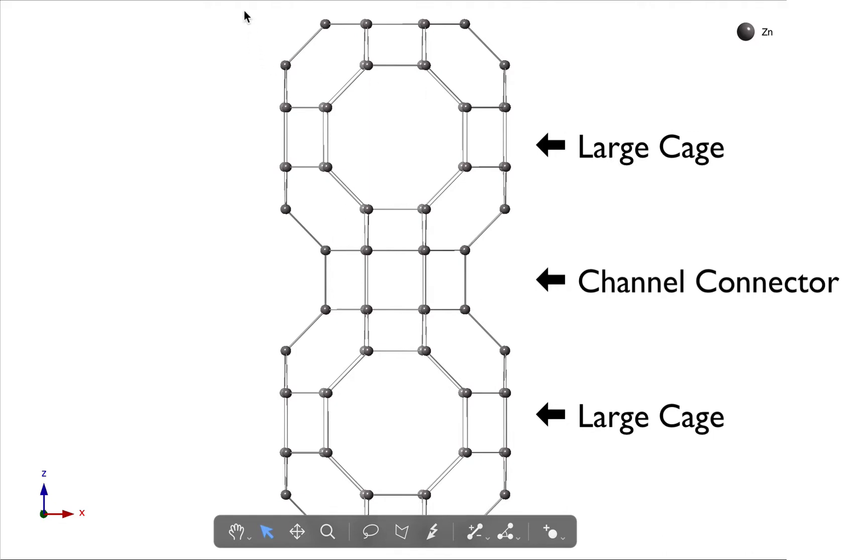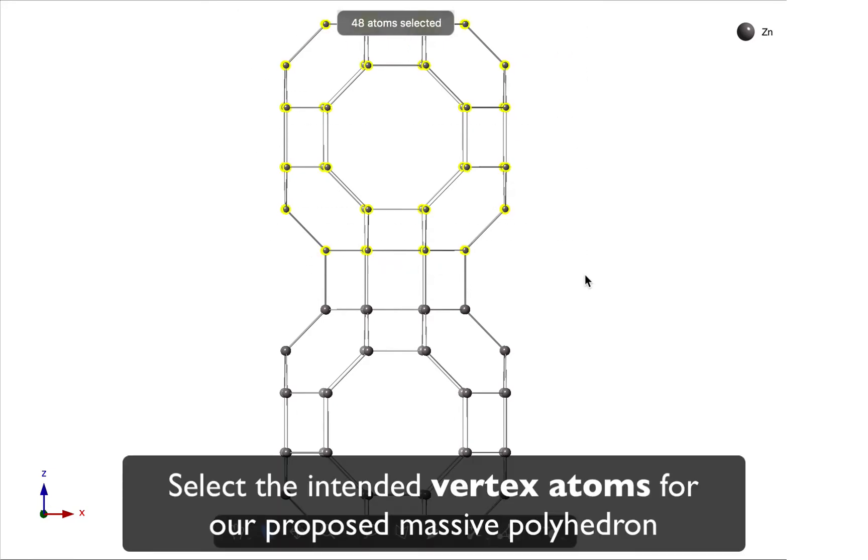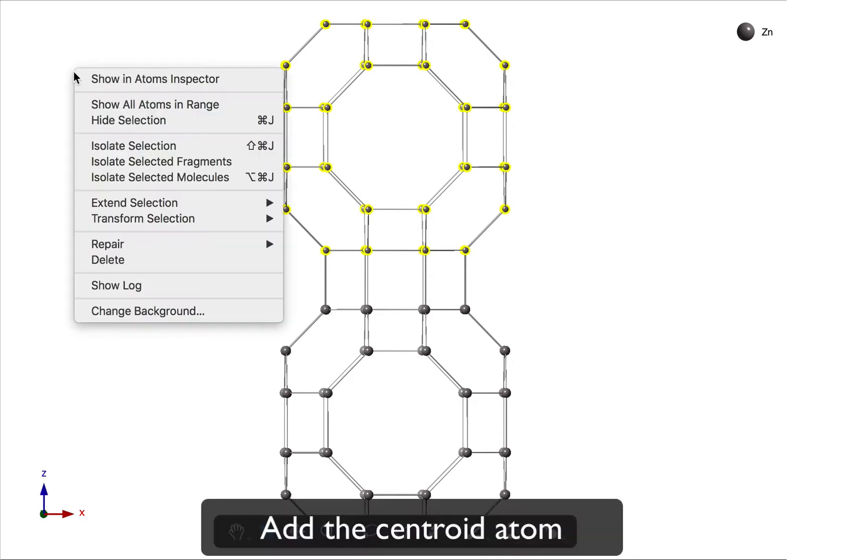I'm going to select the upper unit. Again, I'm going to click and drag with the arrow tool, and I've got 48 atoms. These are the intended vertices of the polyhedron that I want to show. To add a dummy atom in the center, it's very easy. We simply right-click.